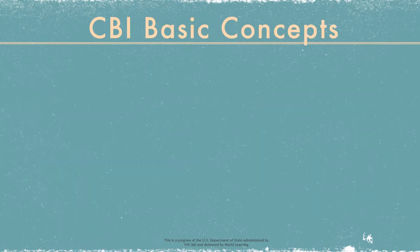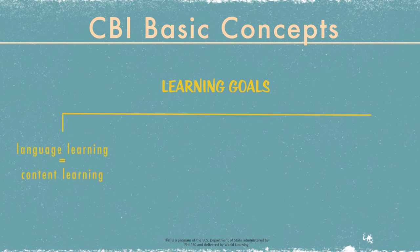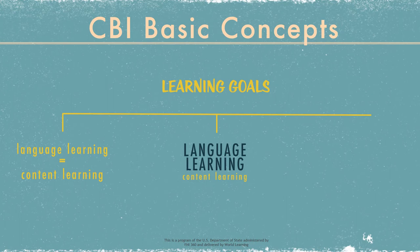As we saw in CBI Basic Concepts, CBI programs vary in terms of learning goals. In some CBI programs, language learning and content learning are considered equally important. In other CBI programs, the primary motivation is to improve students' language proficiency. In EMI contexts, content learning is the primary objective.